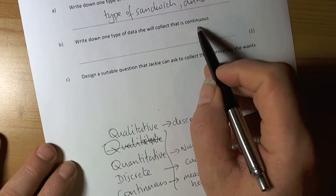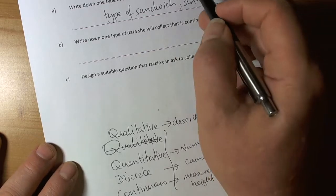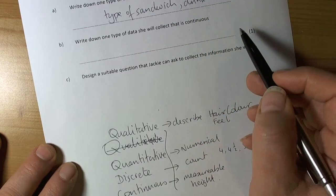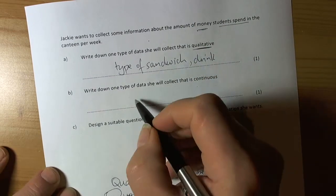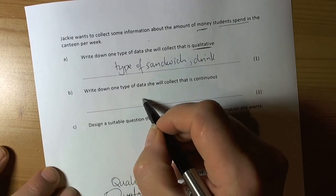Write down one data type that she'll collect that is continuous. Well, she's collecting data about money that they spend, so continuous could be the amount of money.